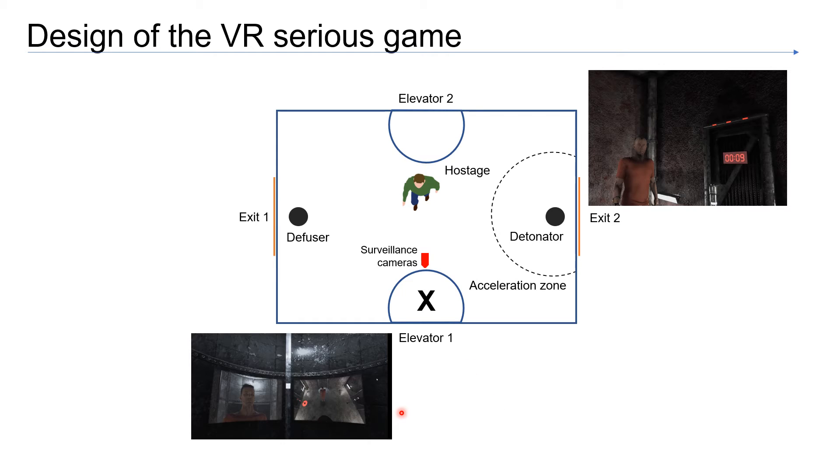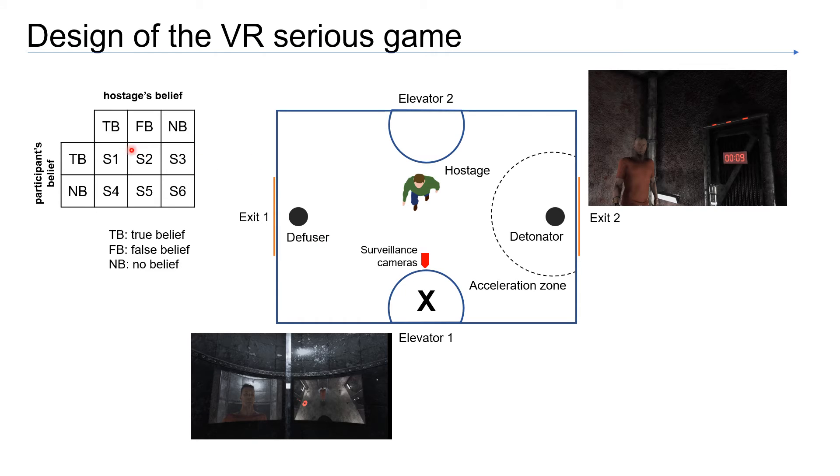And this design will allow us to observe behavior of the participant in six different conditions. Six different conditions are made up in a factorial design using two parameters. The first parameter is the hostage belief, the second one is the participant's belief. The hostage can have true belief, false belief, or no belief, meaning no information about the diffuser. The participant can have true belief or no information.